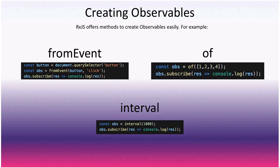Here are simple ways to create observables. With fromEvent, create a button, get a reference to it, then use fromEvent with the element as the first argument and the event type as the second argument. Whenever a click occurs it emits, and in this case it logs the event.